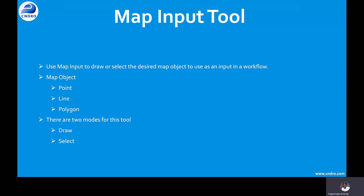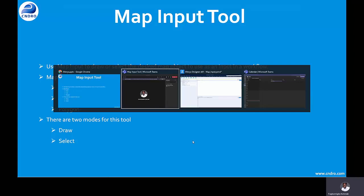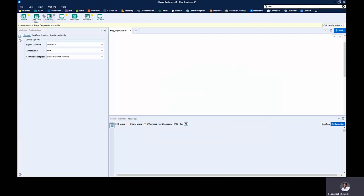The Map Impute tool basically helps us to draw or select a desired map object to use as input in our workflow. There are basically two modes for the Map Impute tool: the first is the drawing mode, and the second is the selecting mode. The Map Impute tool is located in the input and output tool palette, as you can see here.